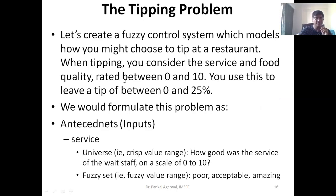Let us understand this with a small example called the tipping example — a very famous example. We create a small fuzzy control system that gives you a fair idea. You have to model how to choose the correct tip at a restaurant. When tipping, you consider the service quality and the food quality. Suppose we decide to rate both quality and service on a scale of 0 to 10.